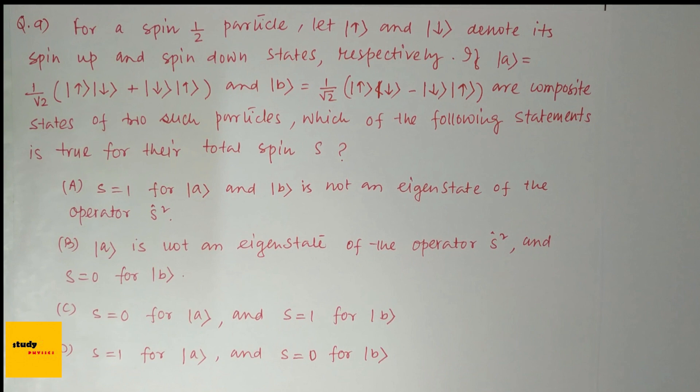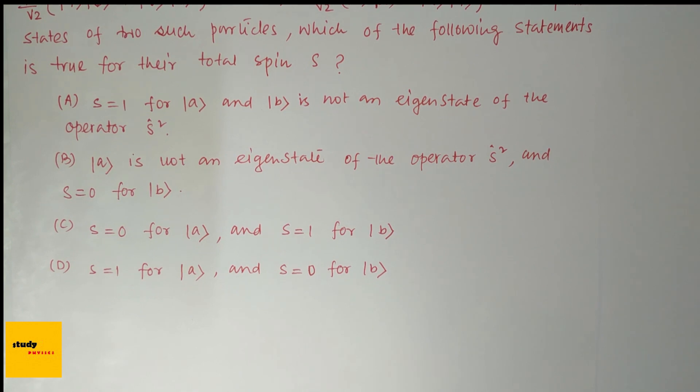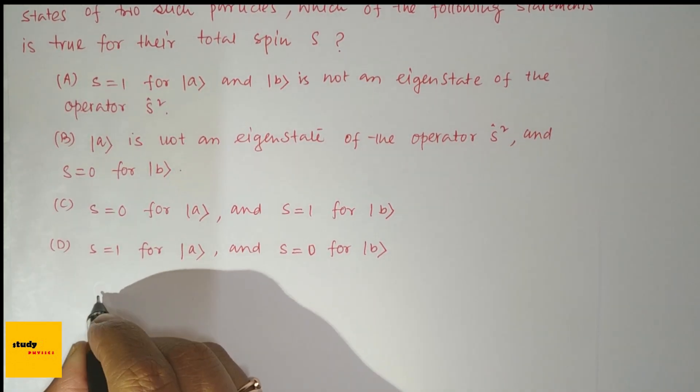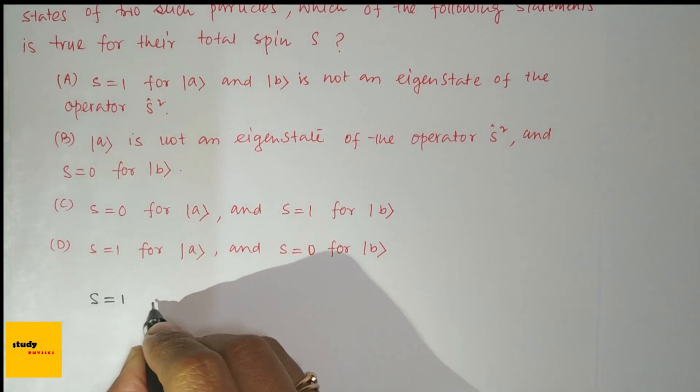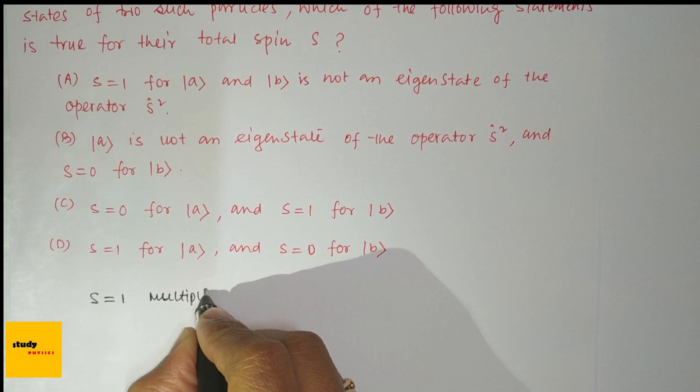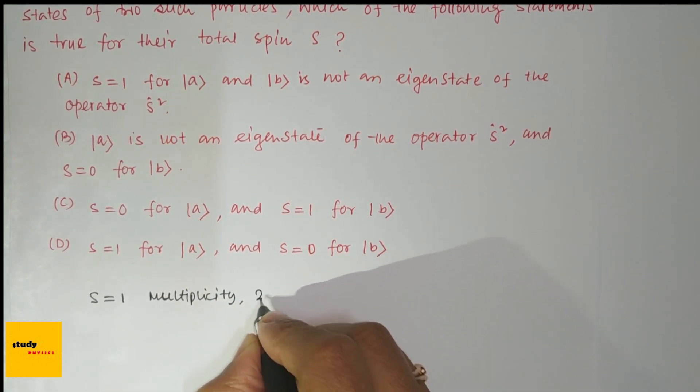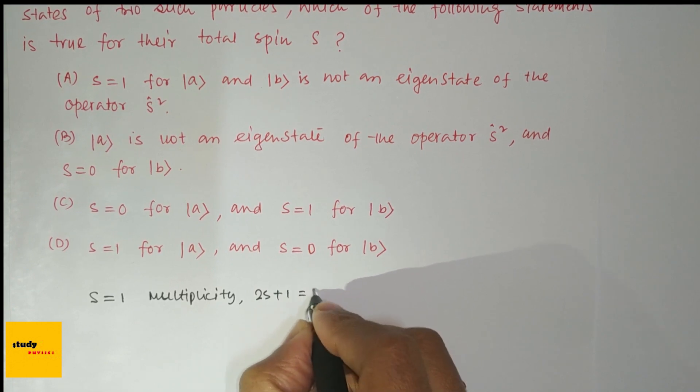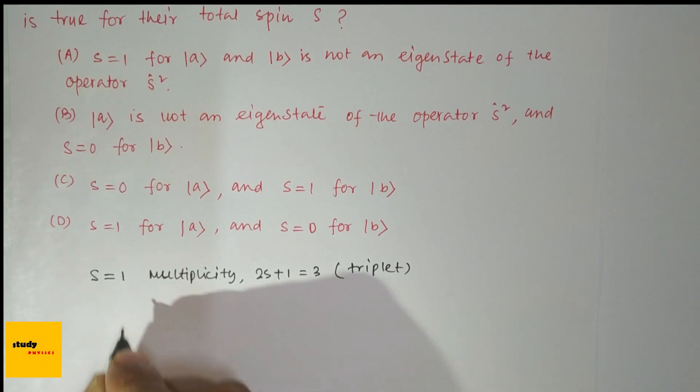Here are the four options. This is a quite easy problem because we know that if S=1, from the multiplicity 2S+1=3, that means S=1 is a triplet state.